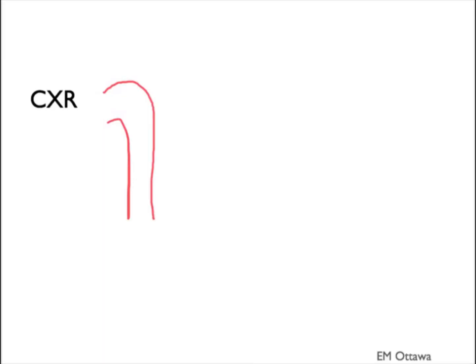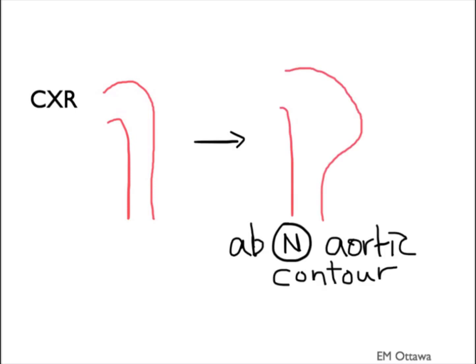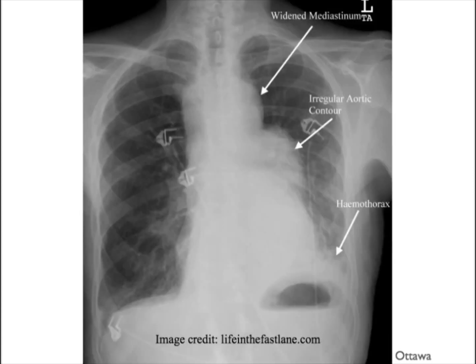In an aortic dissection, the normal contour of the aorta is also being distorted. On a chest x-ray it will look like this — you can see the irregular aortic contour. There is also a widened mediastinum as well. In some patients, they'll have a unilateral pleural effusion.